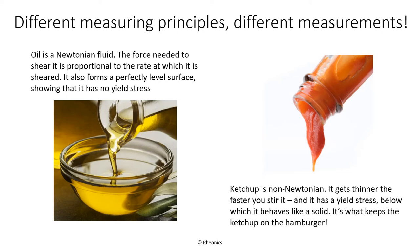Viscosity is a somewhat misleading term, because it suggests that it is a fixed property of a fluid. But only a small minority of fluids have a fixed value of viscosity — these are called Newtonian fluids. The viscosity of a Newtonian fluid is independent of the rate at which it is sheared; therefore, almost all viscometers will measure the same viscosity regardless of the measurement principle. Typical Newtonian fluids include water, pure vegetable and mineral oils with no additives, and sugar syrups. The vast majority of fluids are non-Newtonian. The reading of a viscometer in a non-Newtonian fluid depends on the shear rate with which it is measured. Ketchup is a strongly non-Newtonian fluid — the reading it gives with a viscometer depends on its measuring principle as well as the shear rate that it produces.